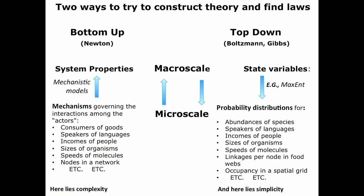In general, what one does is make mechanistic models in which we take some understanding of the mechanisms governing the players at the micro scale — for example, in economics, the consumers of goods; in linguistics, the speakers of languages; incomes of people, sizes of organisms, speeds of molecules, the nodes in a network, etc. — and extend with mechanistic modeling up to the macro scale to derive system-level properties.